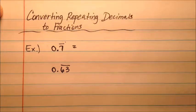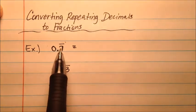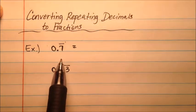In this video, I'm going to discuss converting repeating decimals to fractions. In the previous video, we did terminating decimals, which were decimals that stop, like 0.7.